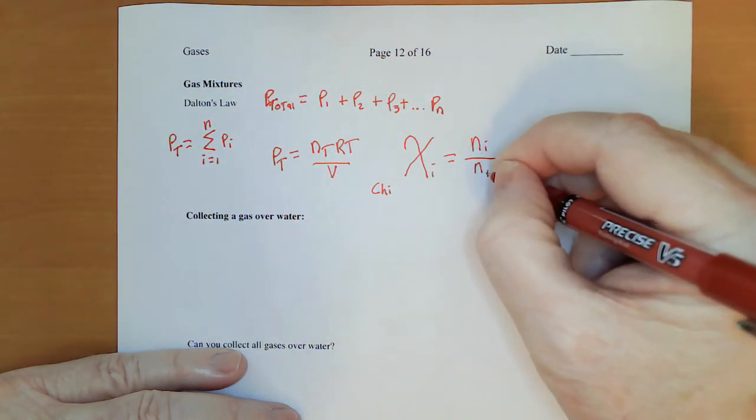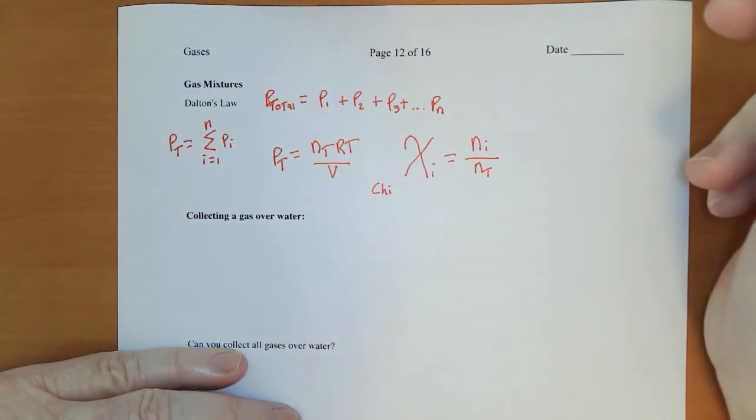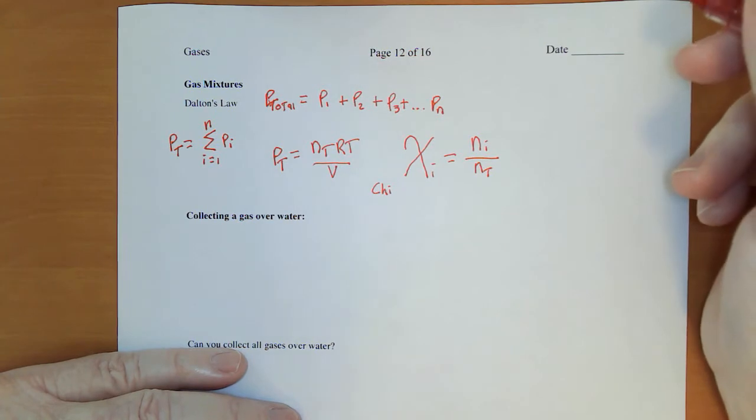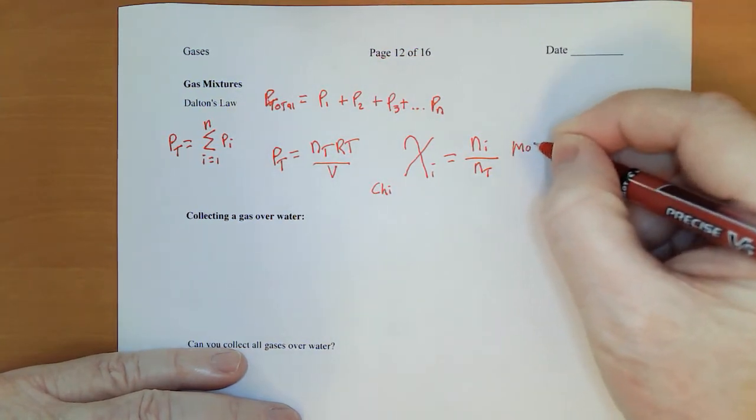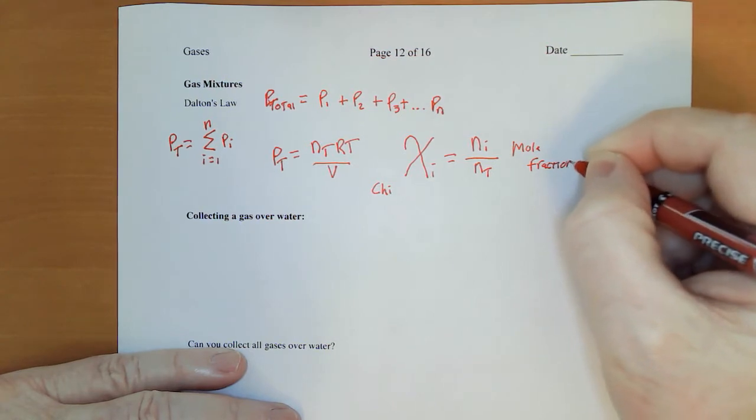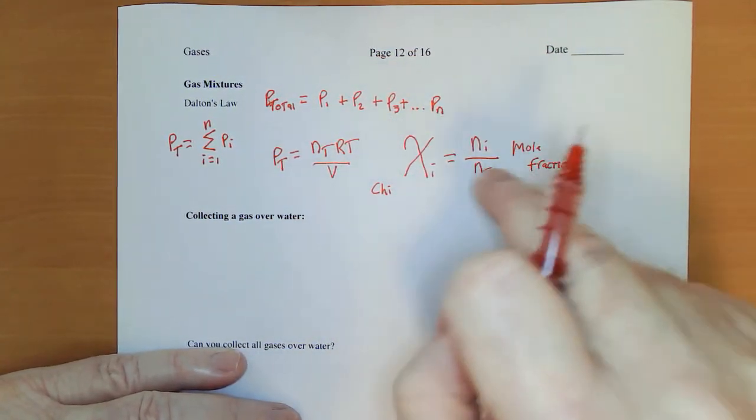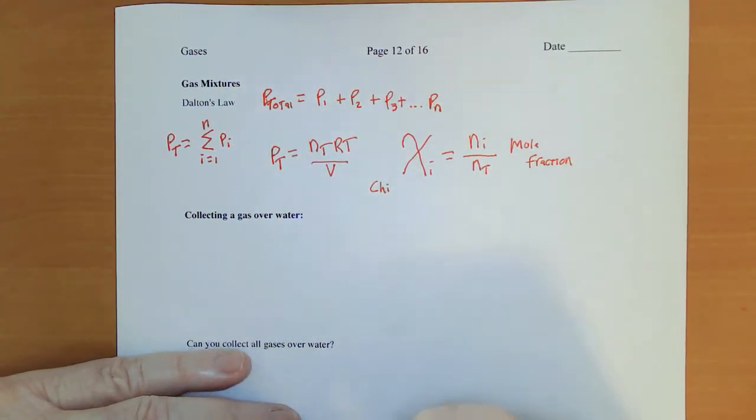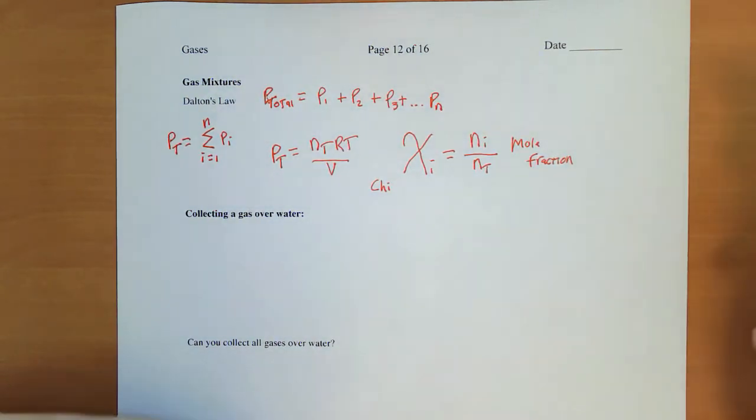The mole fraction of i is just that, it's a fraction. You take the number of moles of i divided by the moles total and you have a fraction. It will always be less than one. When you add up the mole fractions of all the individual gases, it will equal one.